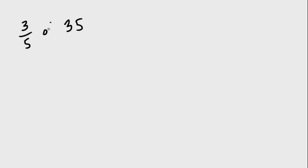Say we have a number like 35 and I say I want three-fifths of 35. We used arrays, we used counters, we placed our pieces out. And all of those are great, but once we get to a bigger number where it's kind of ridiculous, we start thinking abstractly. And math allows us to do that.